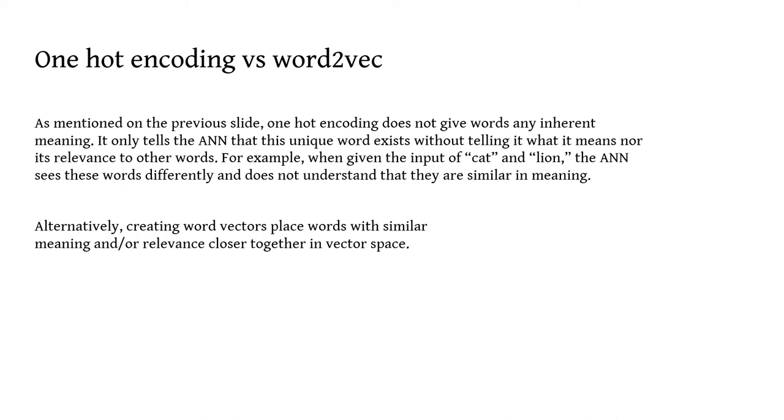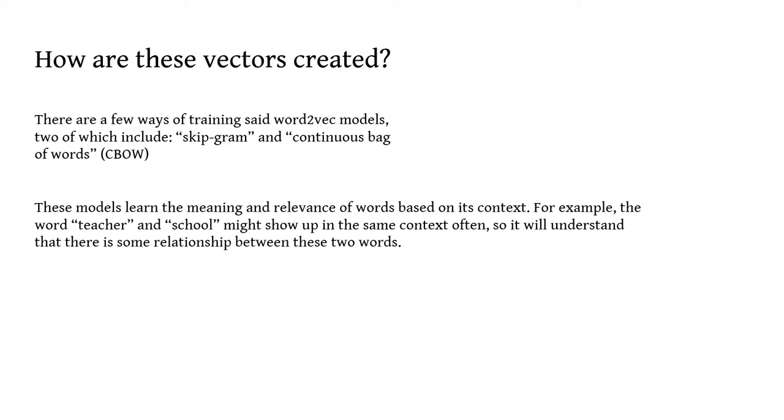But alternatively, you can construct word vectors using skip-gram or continuous-bag-of-words, which I'll be discussing in just a moment, to place words with similar meaning or relevance closer together in vector space. So how are these word vectors actually created or constructed? Well there are a few ways to do it. Two of which include the skip-gram model, which I'll be focusing on in this video, as well as continuous-bag-of-words. And these models learn the meaning and relevance of each word based on its context and its surrounding word. So as an example, teachers and school might show up in the same context often, so it will begin to understand, oh well maybe there's some sort of relevance between these two words.